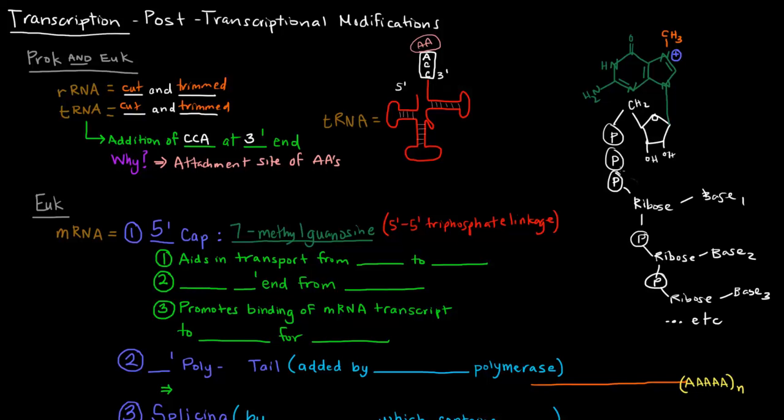So if this is the 5' end of a particular strand, what are we going to have? Well, this here, this portion here, is the 7-methylguanosine cap right here. So why is it called the 7-methylguanosine? Well, this portion is a ribose with a guanine attached to it, so that's the guanosine portion.